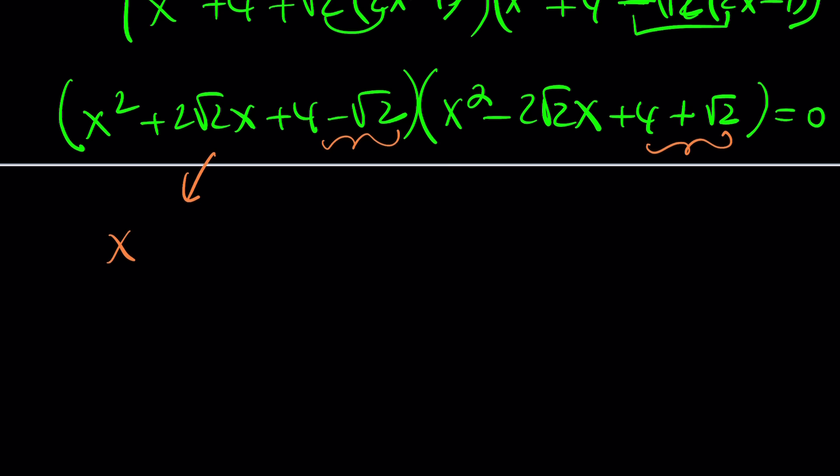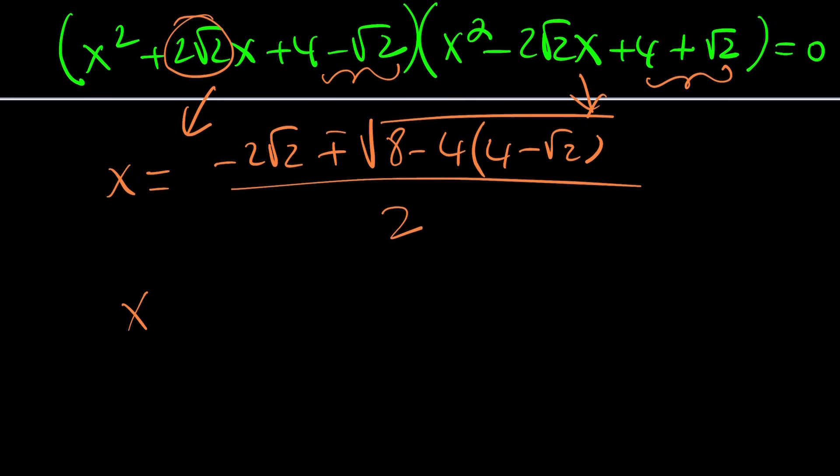So, now we have these two equations. Let's take a look. For example, I can solve this one. The other is going to be yours because they're going to be very similar. x equals negative b plus minus the square root of b squared. That's going to be 8 when you square it. Minus 4 times a times c, which is 4 minus root 2. And the whole thing is divided by 2. x is going to be negative 2 root 2 plus minus 8 minus 16, which is going to give you a negative 8, plus a 4 root 2.